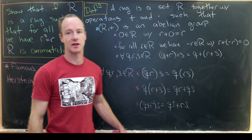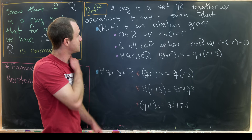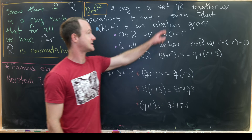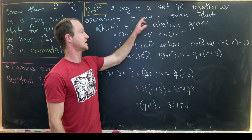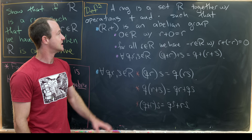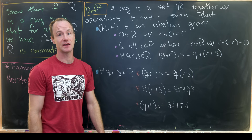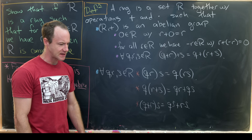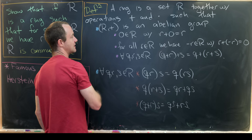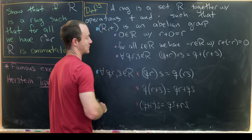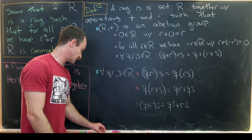Let's parse some of that out by looking at the definition of a ring first. A ring is a set R together with two operations, addition and multiplication, such that R together with addition is an abelian group. That means zero is an element of R — we have an additive identity, so r plus zero equals r.